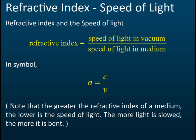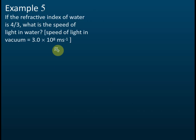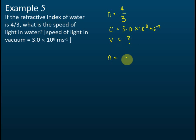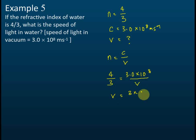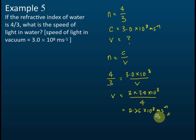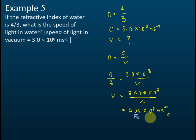The greater the refractive index, the more the change in speed and the greater the angle of refraction. For the practice question, the answer is 2.25 × 10⁸ m/s. This question is very direct — they give you the refractive index and the speed of light in vacuum, and ask you to find the speed of light in water. Just use the formula n = c/v, plug in the values, and use your calculator to find the answer.